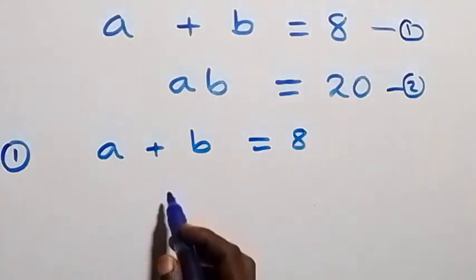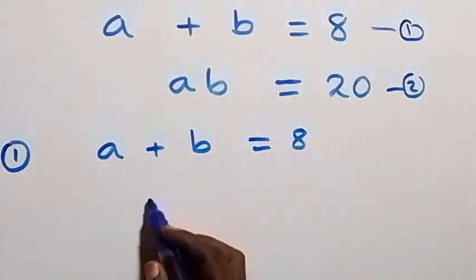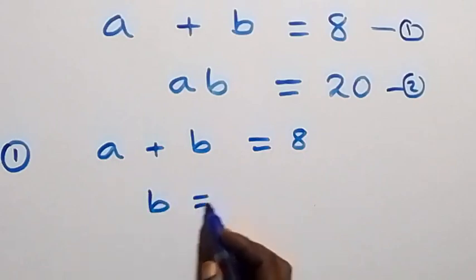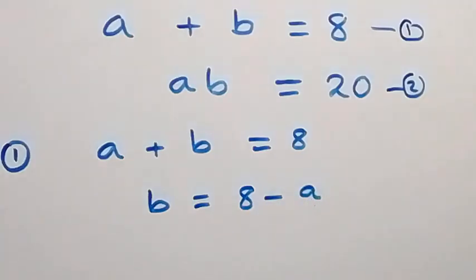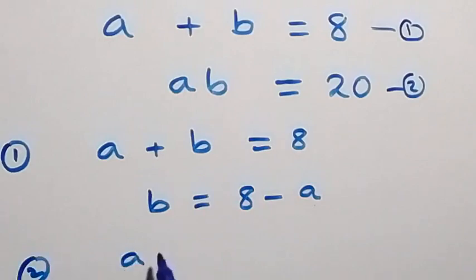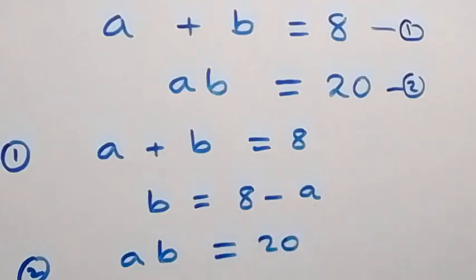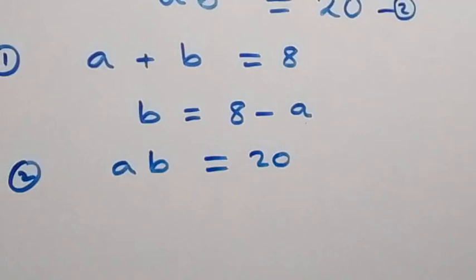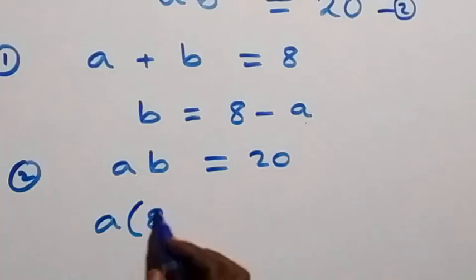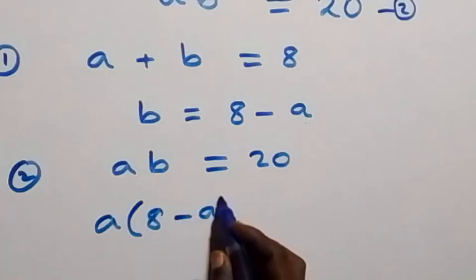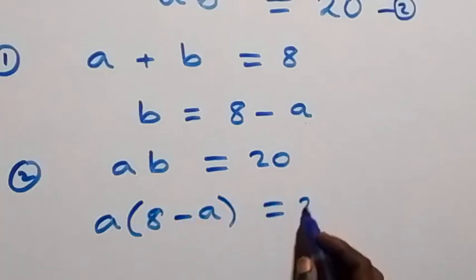when we make b the subject, taking a to this side, then we have b equals to eight minus a. Then using this in equation two, which is a times b equals to 20, we substitute the value of b and we have a times (eight minus a) equals to 20.